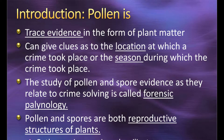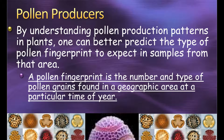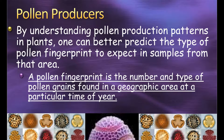Pollen and spores are both reproductive structures of plants — they are there to aid plants in their ability to reproduce. Not every plant is going to produce pollen. Some plants produce pollen and some plants produce spores. But by understanding the production pattern for both of these things, we can pretty much predict what's called a pollen fingerprint.